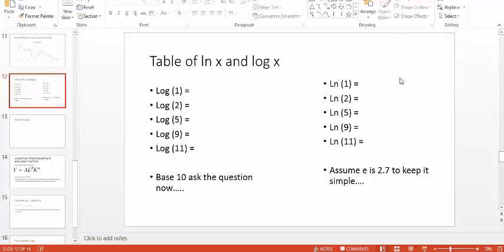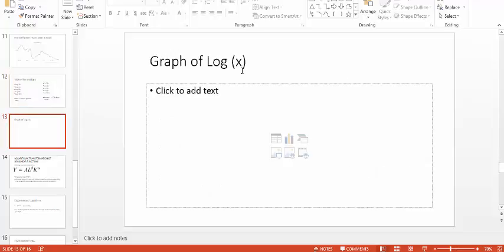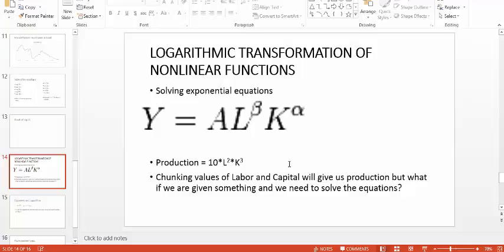We're left with the table of natural log of x and log of x. Most of the time when I say log of x, I'm talking about base 10. There's one equation the book discusses - the production function which has two exponentials for labor and capital. When we want to work with this equation, we need the help of logs, so we'll take a log on both sides, separate things, and then solve it.